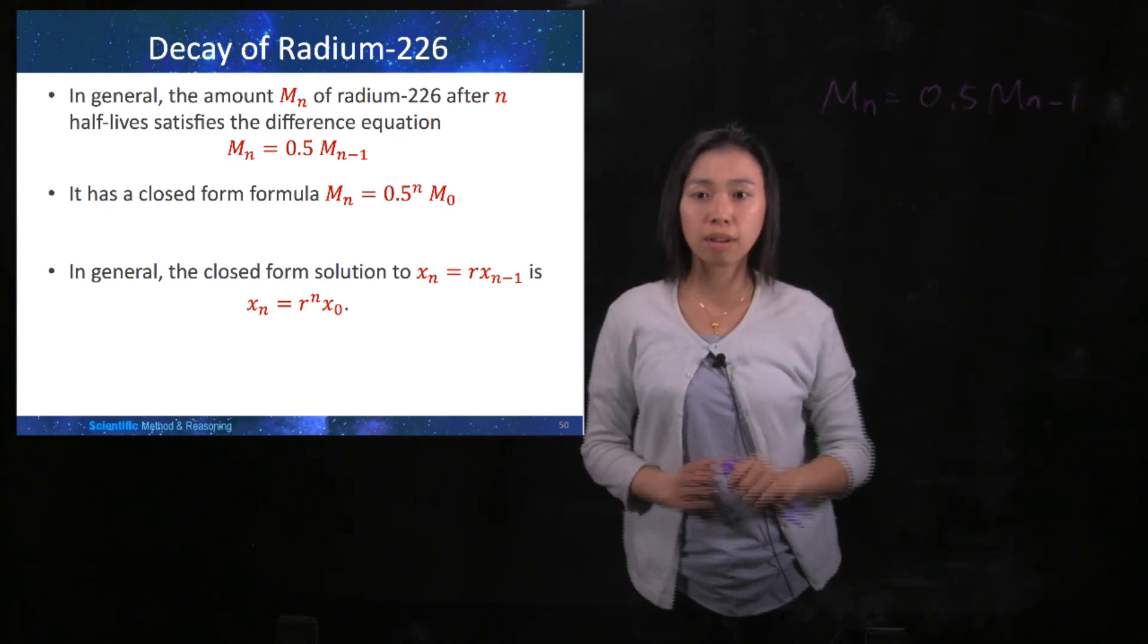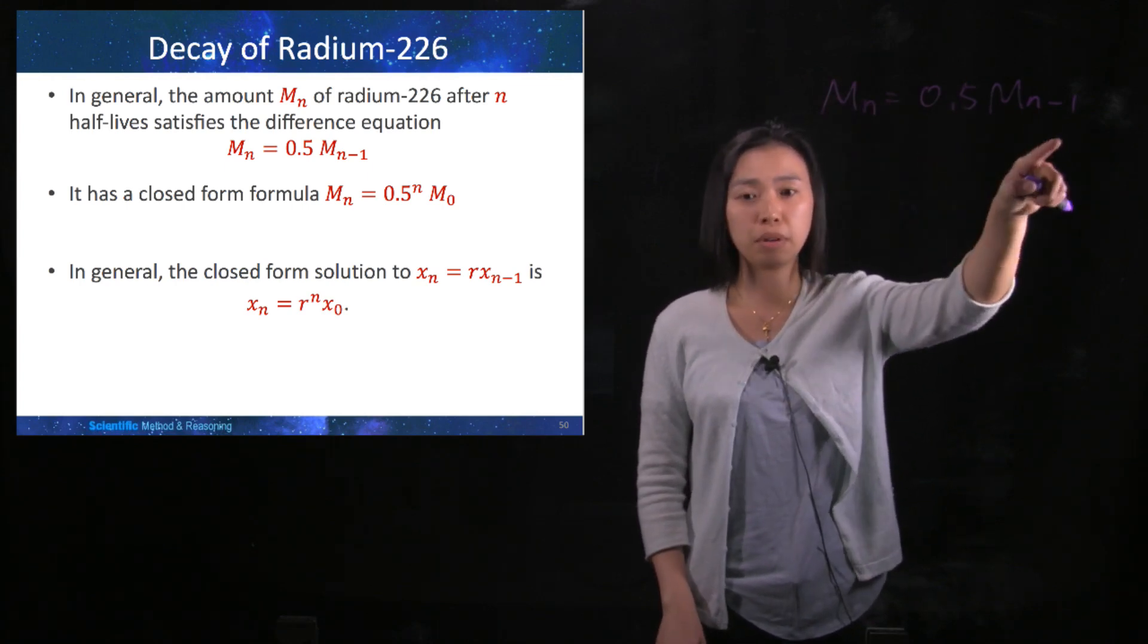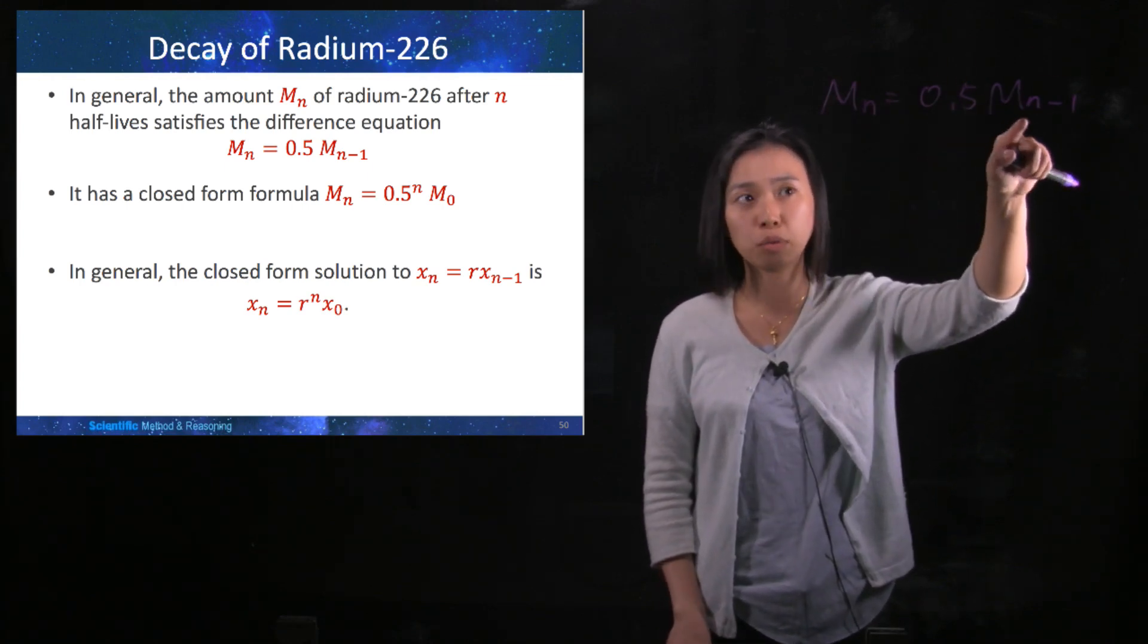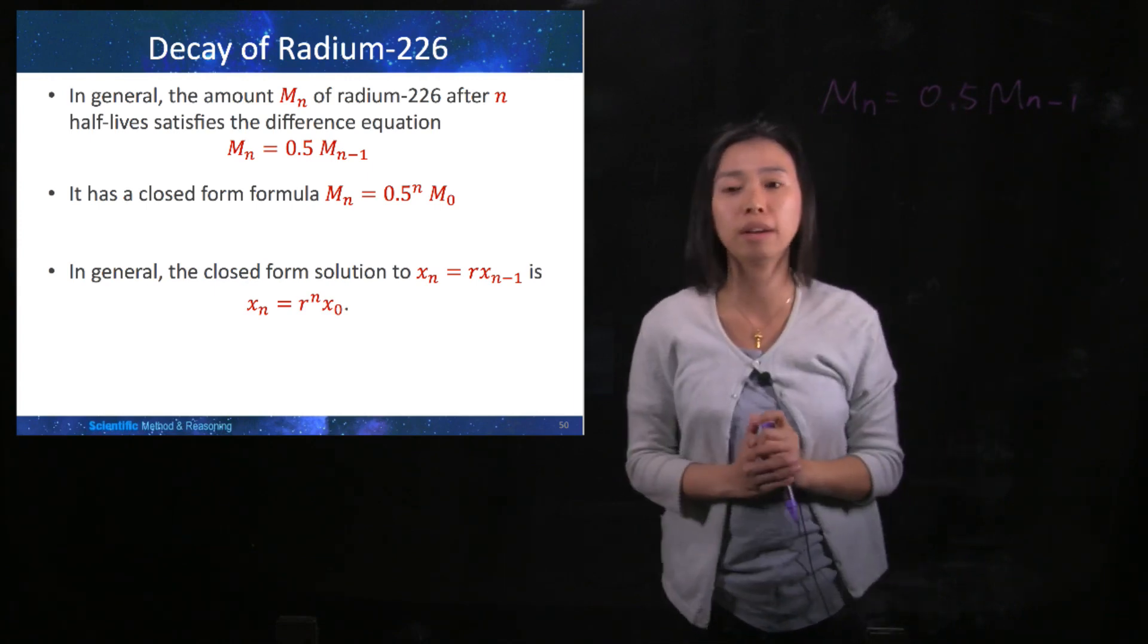That means the current amount of radium-226 depends on the previous amount of radium-226, and it is actually half of the previous amount.